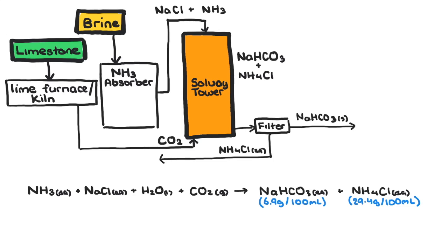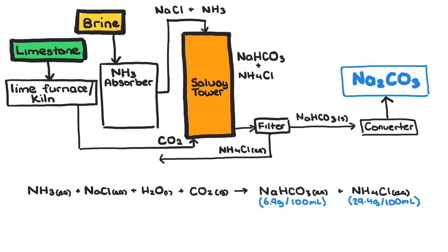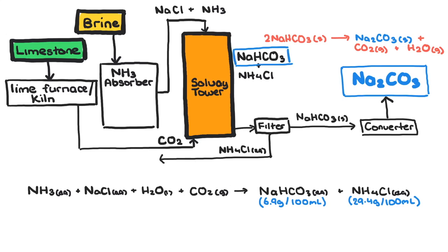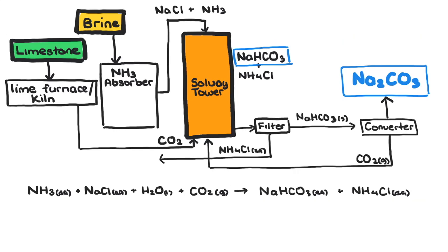The sodium hydrogen carbonate is converted to sodium carbonate by heating it at 300 degrees Celsius. It is then washed and dried, ready to be stored or transported. The carbon dioxide produced in this step is reused in the formation of sodium hydrogen carbonate earlier in the process.